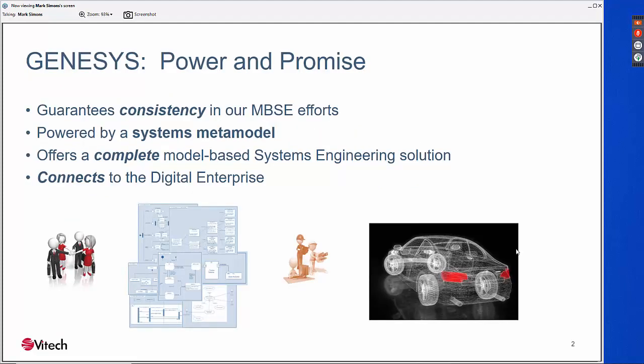So what makes Genesis so powerful? Genesis allows us to model our systems completely and consistently across our organization using what we call a systems metamodel. Genesis also comes as a single package — a complete system engineering tool that delivers the full capabilities of model-based systems engineering with no need to rely on other tools or plugins. With data organized in this systems metamodel, you have all the information at hand to connect with other detailed engineering tools in your digital enterprise and better tackle the complexity you'll be facing.